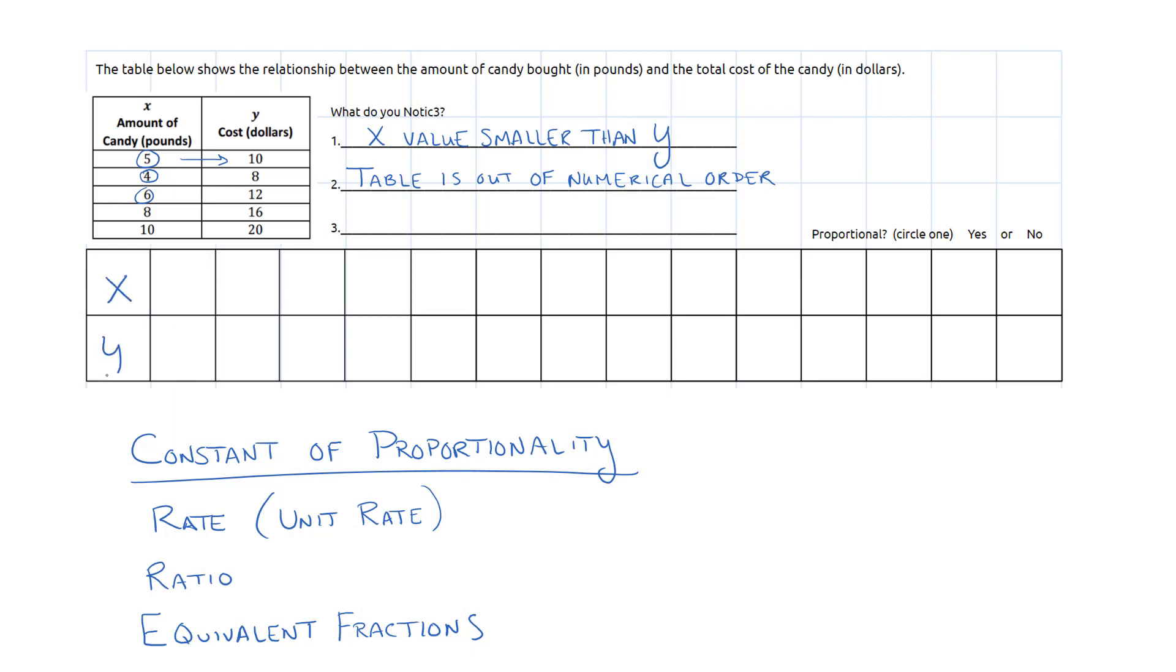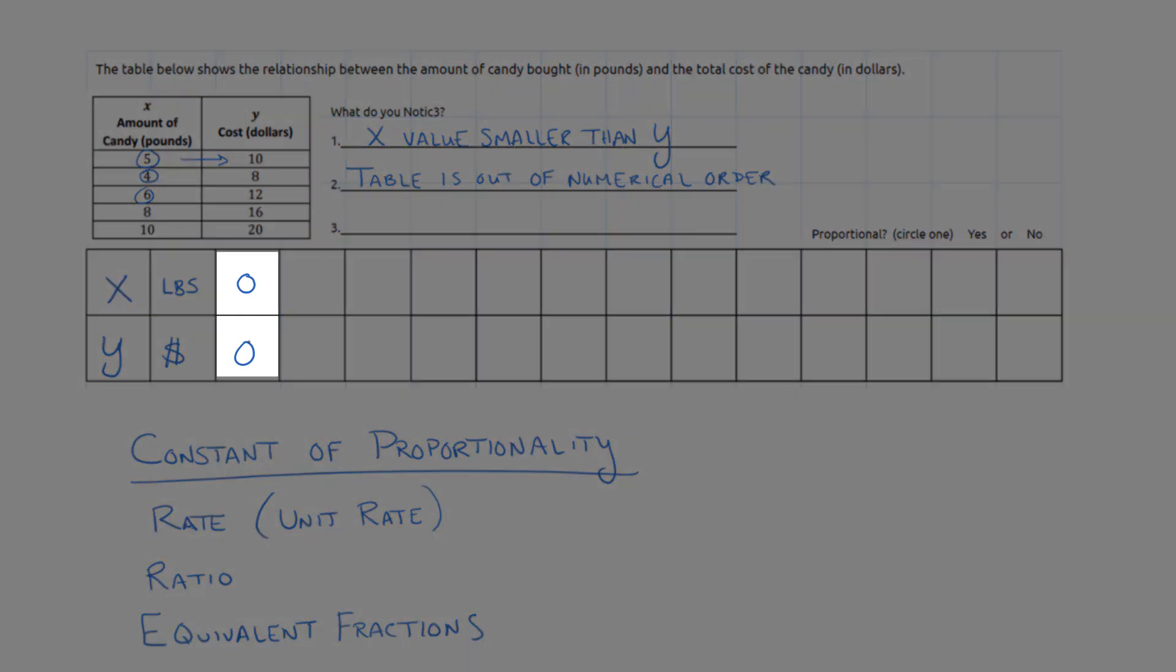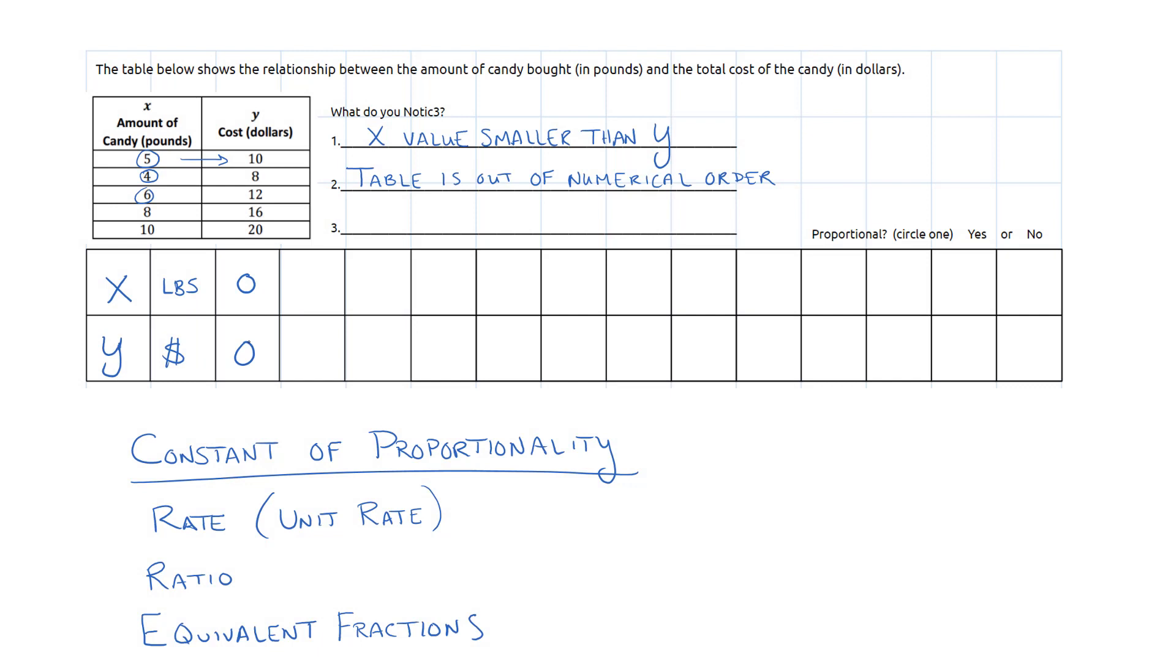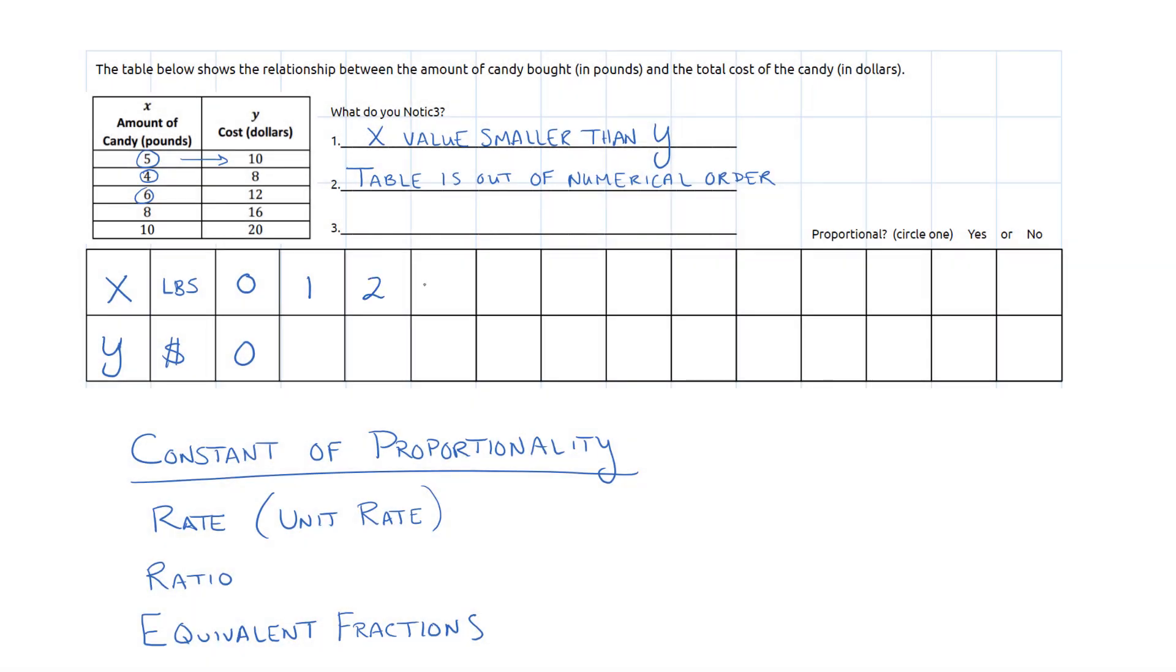Alright, so I'm going to go into my table. My x value is going to be on the top, my y value on the bottom. I like to put down the label of what it is that we're doing. And in order to be proportional, we have to start at zero. Any line, any proportional relationship, we will go through a table at the point zero, zero. So from there, what I'm going to do is I see that ten is my biggest number for the amount of pounds that I'm going to buy of candy. So I'm going to count by ones all the way up to ten.